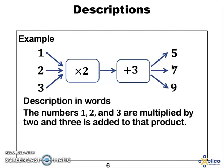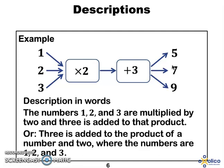The numbers 1, 2 and 3 are multiplied by 2 and 3 is added to that product. Or we could say 3 is added to the product of a number and 2 where the numbers that are used are 1, 2 and 3.